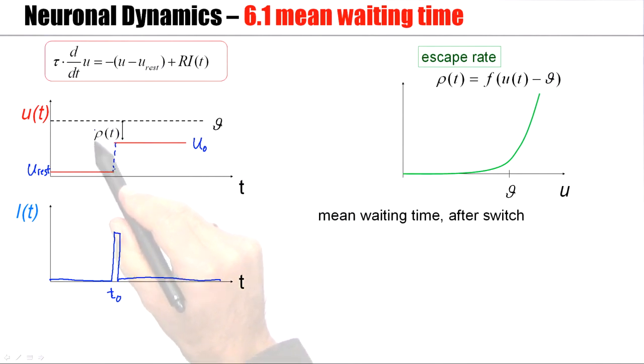Now this momentary escape rate is then a constant. So if this is U₀, then this would be ρ(U₀) and that's a constant.